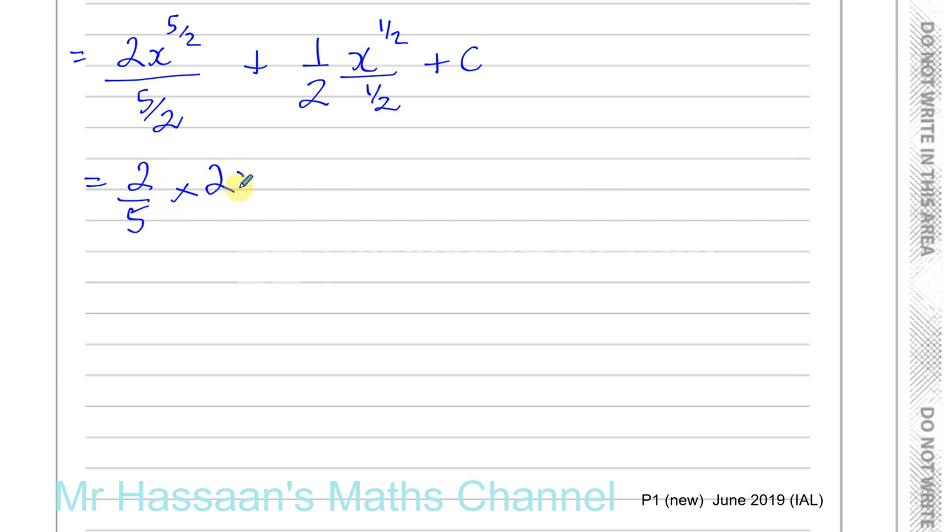and plus, and this is like a half times, now this is like, you know, the reciprocal of a half is 2, so it's like a half times 2, x to the power of a half, and you've got your plus c.